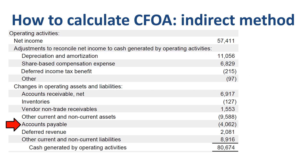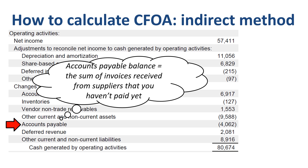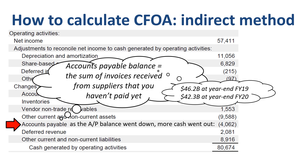Further down we see a change in Accounts Payable. The Accounts Payable balance is the sum of invoices received from suppliers that you haven't paid yet on the balance sheet date. Apple's balance sheet shows Accounts Payable was $46.2 billion at year-end FY19 and $42.3 billion at year-end FY20 — the balance went down. When you pay suppliers, cash goes down. As the Accounts Payable balance declined, more cash went out, reflected by the $4.1 billion cash used by the change in Accounts Payable balance.